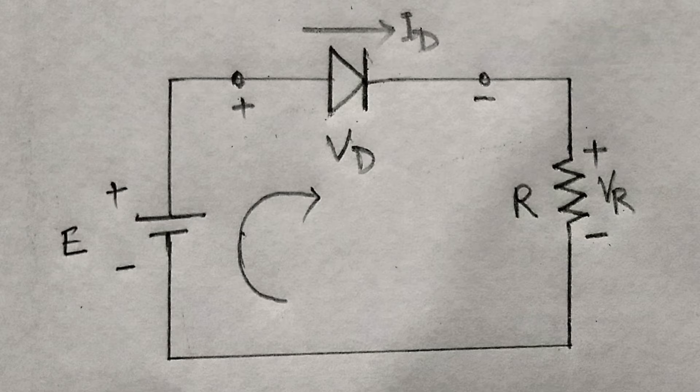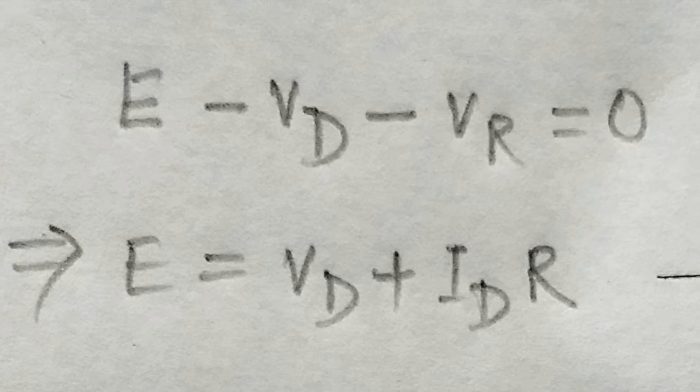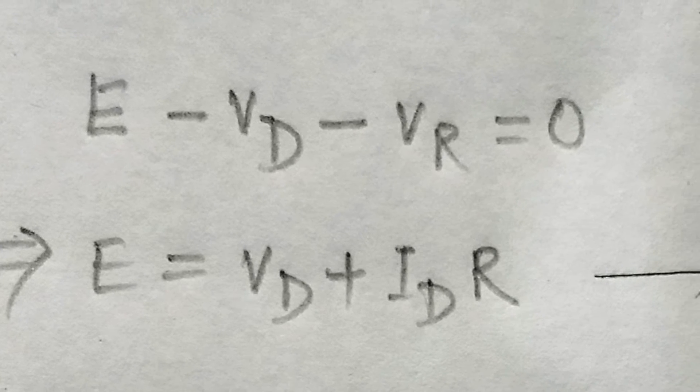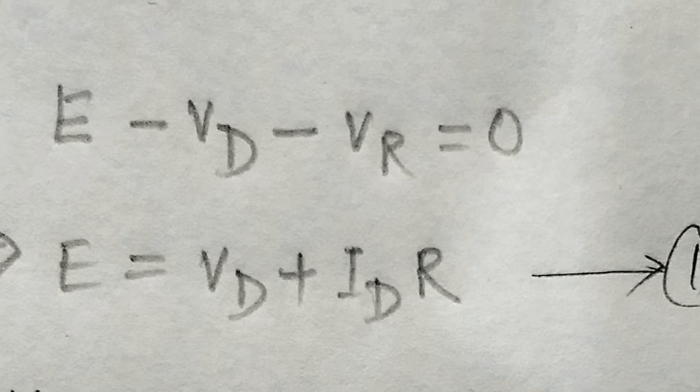Now, let us consider the current flow in the circuit in clockwise direction and the diode is on assumed. By applying Kirchhoff's voltage law to this series circuit, we get equation 12.1.